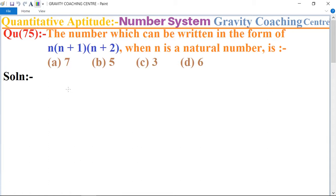when n is a natural number. So in this question, which number is in the form of n(n+1)(n+2): a, b, c, or d?